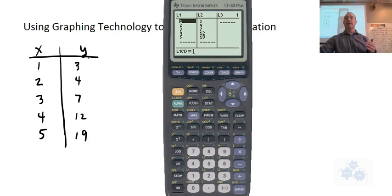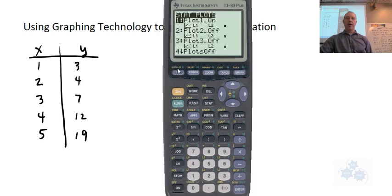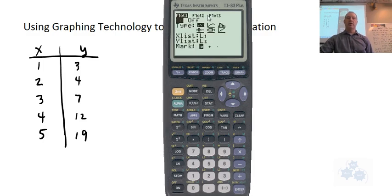So we've got these in here. So what we want to do is we want to tell the calculator that this is our x list right here and this is our y list. So we're going to go to second function, y equal. You see the stat plots there? Now, all of your stat plots are probably off right now. So what you want to do is just in number one there, hit enter so that you get into this screen right here.